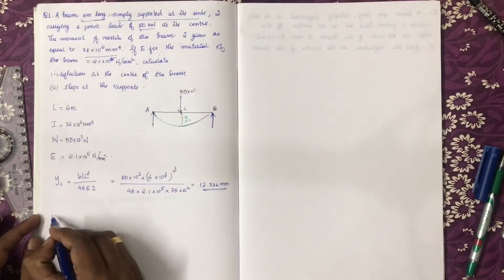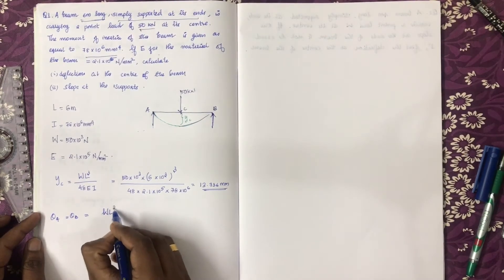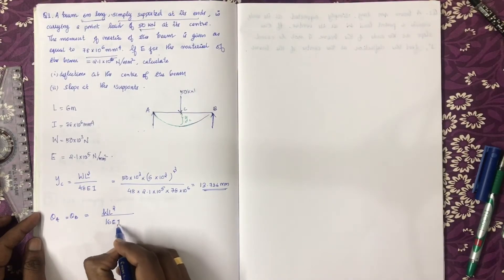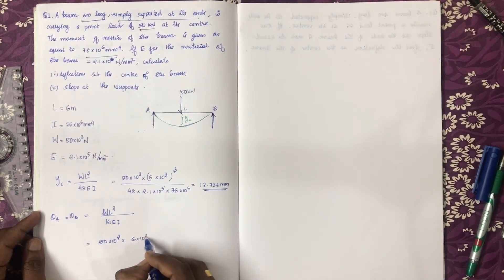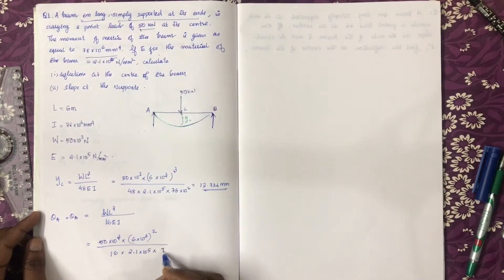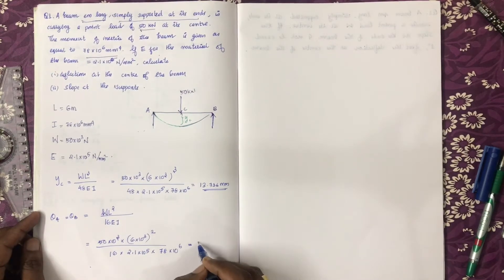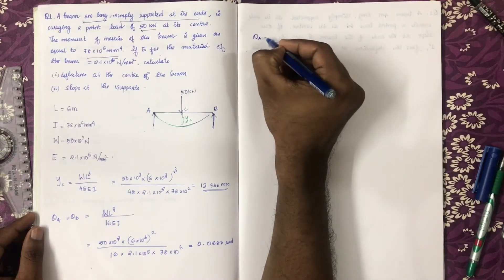Now we will find theta A and theta B — the slope at A and slope at B. This is equal to WL² divided by 16EI. Substituting W = 50 × 10³, L = 6 × 10³ mm, E = 2.1 × 10⁵, and I = 78 × 10⁶, theta equals 0.0688 radians. Theta A and theta B are in radians.